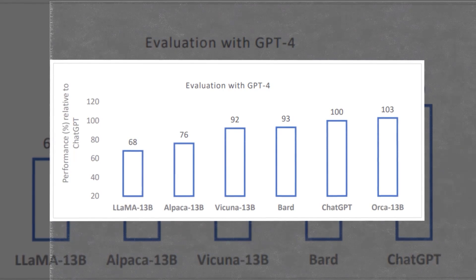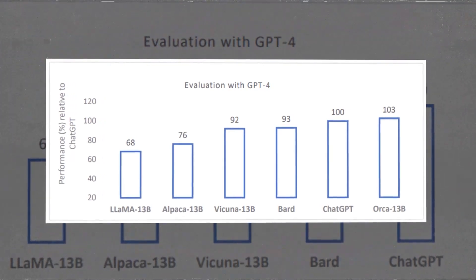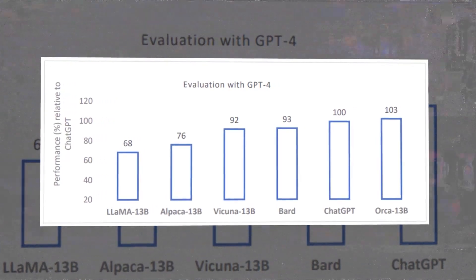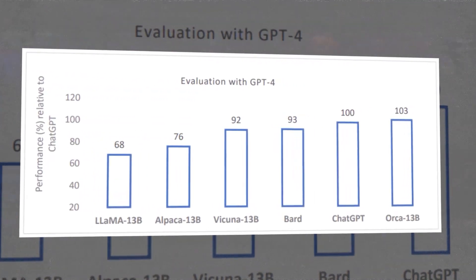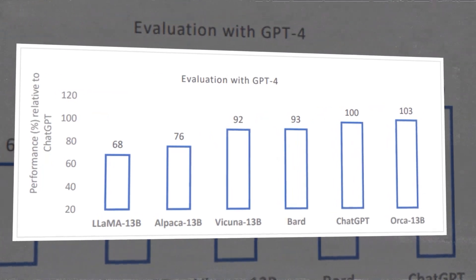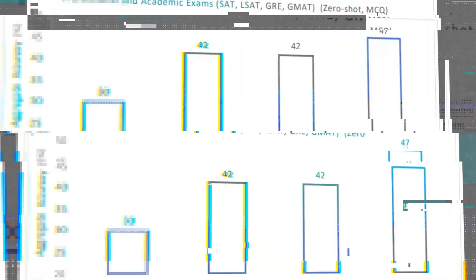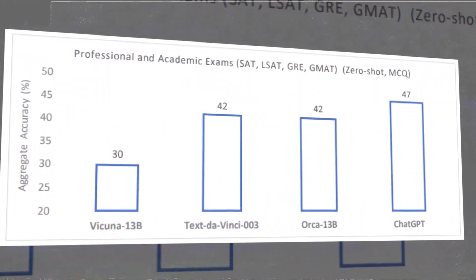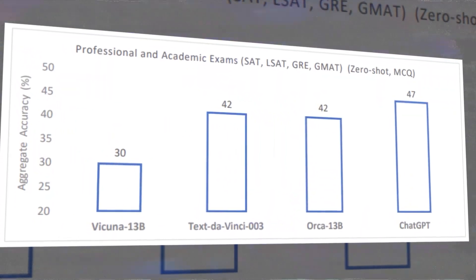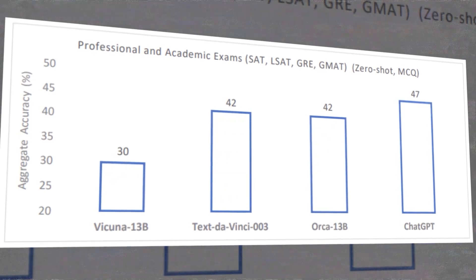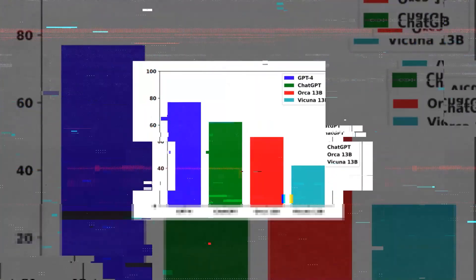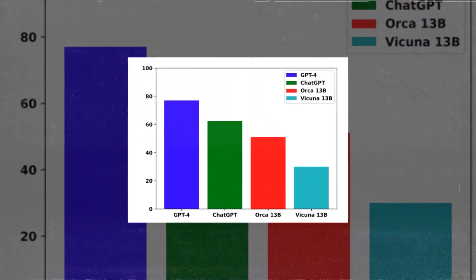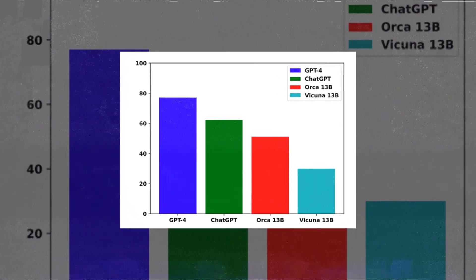The results show that these models outperform many state-of-the-art instruction-tuned models, such as Vicuna 13B, BARD, and Text DaVinci 003. They also reach parity or surpass ChatGPT on some tasks, and even come close to GPT-4 on others.